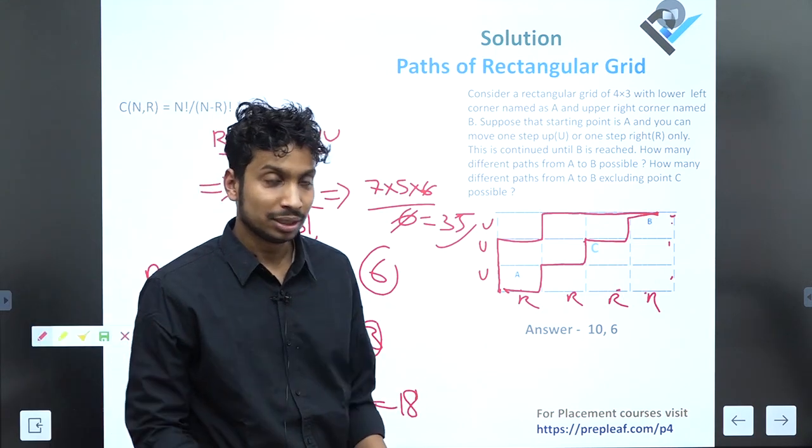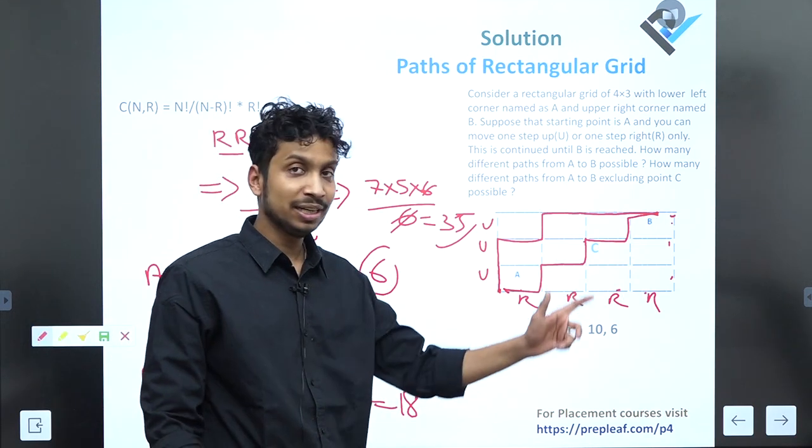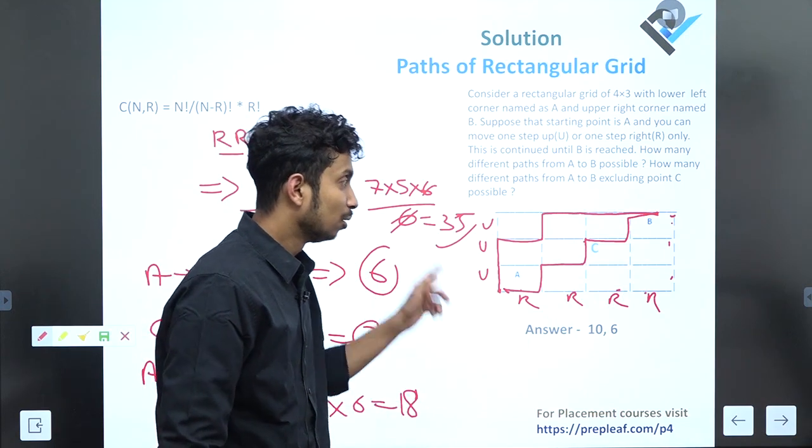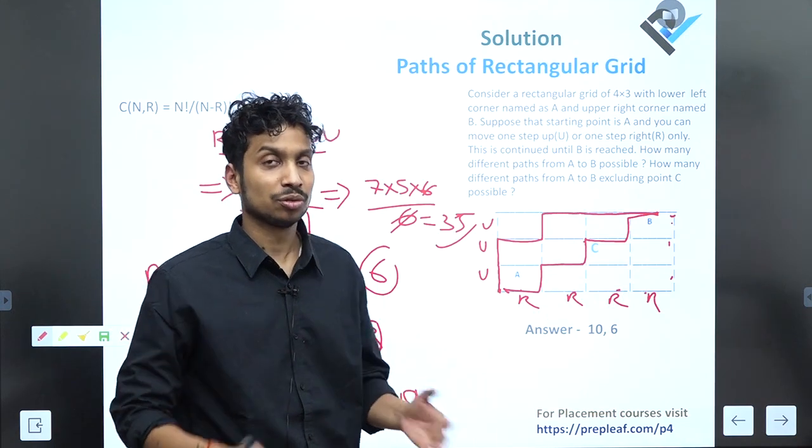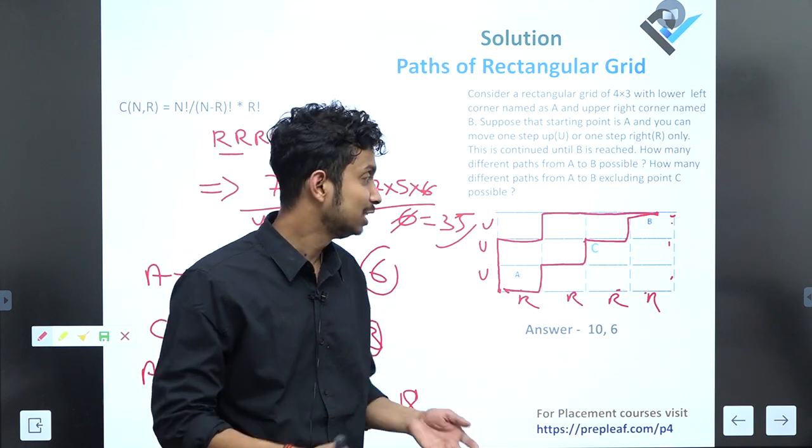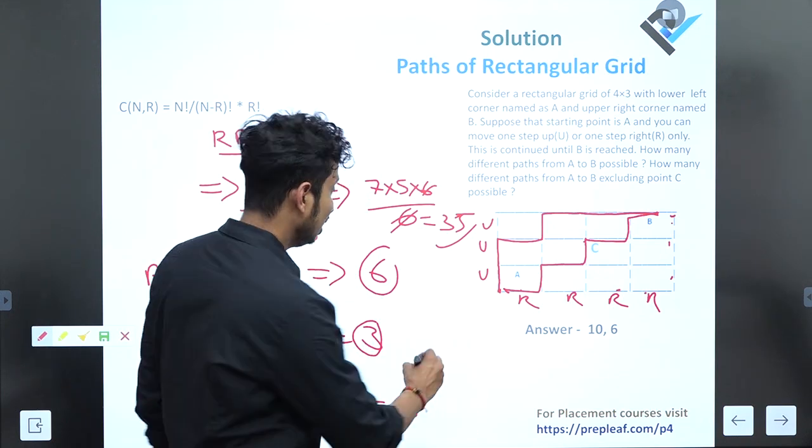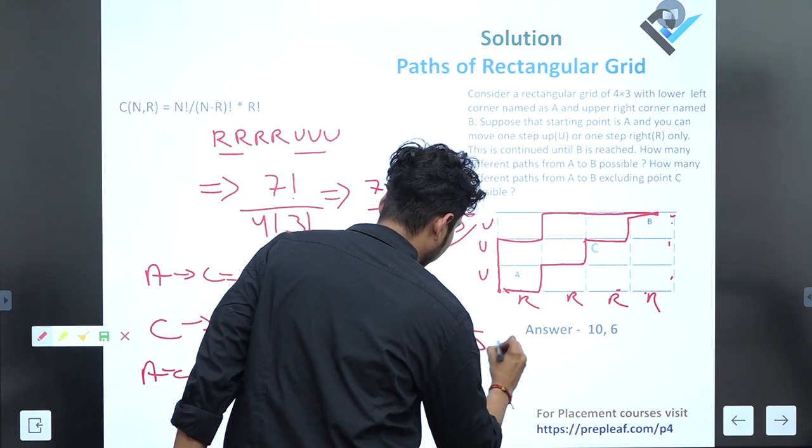Now we've figured out two things: number of ways of reaching from A to B, and number of ways of reaching to B through C. So the number of ways of reaching B excluding C will be 35 - 18 = 17.